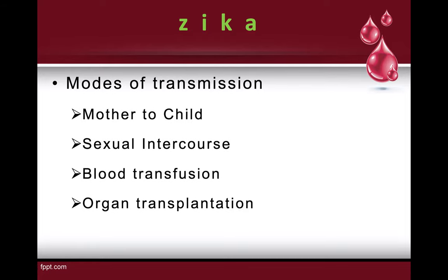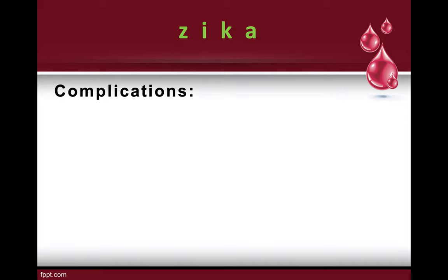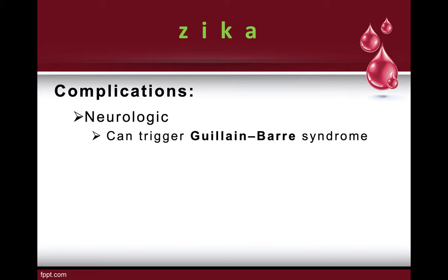For the complications of Zika: there are neurologic complications that can trigger Guillain-Barré syndrome. Guillain-Barré is a rare disorder in which the body's immune system is directed against its own nerves. It is characterized by weakness and tingling sensation in the extremities, which are usually the first symptoms. Zika can act as a trigger for this syndrome.